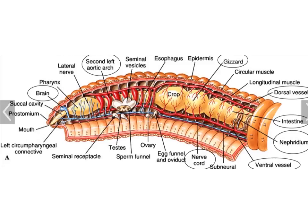Finally, each segment except the first three and the last contains a pair of microscopic openings known as nephridiopores. Here we can see the nephridium, which opens to the pores — these are the openings of the excretory system. Internally, the excretory structure is known as the nephridium.